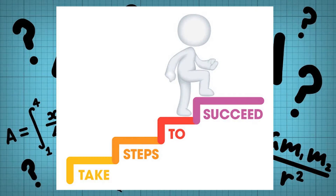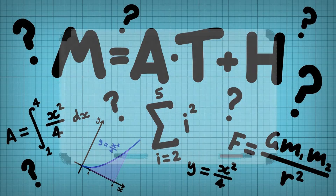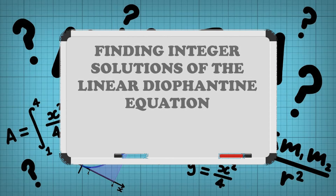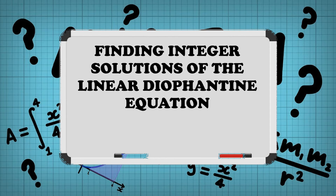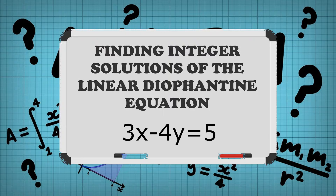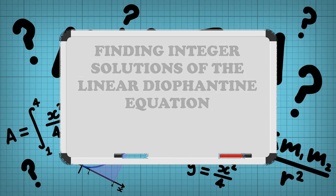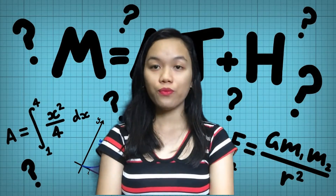Before introducing the steps, this will be the problem set that we'll be using and be basing our explanation. Find the integer solution of the linear Diophantine equation: 3x minus 4y equals 5.